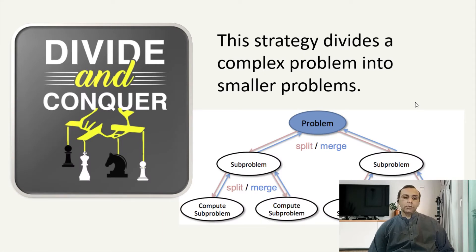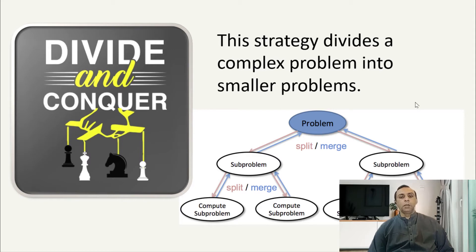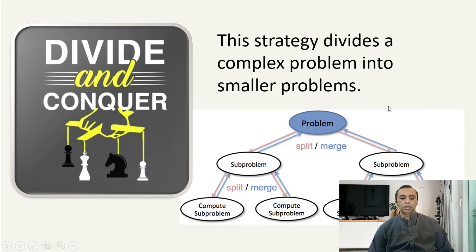The divide and conquer strategy divides a complex problem into smaller problems. We move closer to a solution once we break it down and work towards solving each part. Solutions from parts are then merged together. This strategy is called divide and conquer.